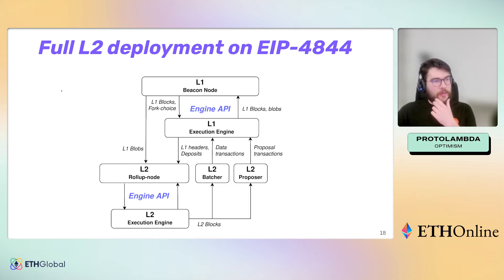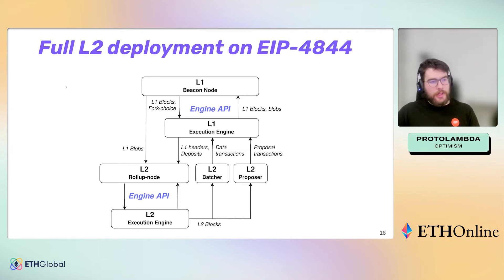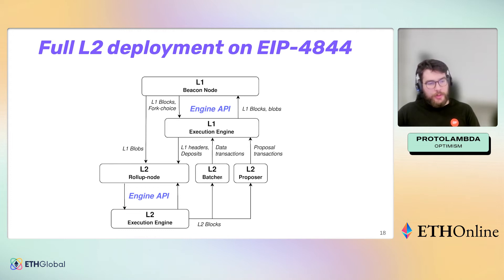A full layer two deployment looks like this: we have a layer one beacon node, a layer one execution engine, a layer two rollup node, and a layer two execution engine. You can see the similarities, where they both have an engine API, the separation of consensus and execution, and helper modules that make the data - the inputs and the outputs - available to the higher layer.